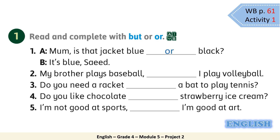Number 2: 'My brother plays baseball. __ I play volleyball.' We are giving two different ideas, so we would say: 'My brother plays baseball, but I play volleyball.' Number 3: 'Do you need a racket or a bat to play tennis?' Number 4: 'Do you like chocolate or strawberry ice cream?' Number 5: 'I'm not good at sports, but I'm good at art.' Good job.